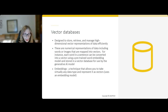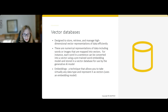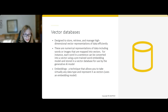Another component is a vector database. These have been around for a while, and they were designed to store, retrieve, and manage highly dimensional vector representations of data efficiently. Some generative AI applications are going to require this. These vectors are numerical representations of data — each word in a sentence can be converted into a vector using a pre-trained word embedding model. You take the unstructured text data, run it through a word embedding model, and that creates an embedding — a representation of any kind of data as a vector, which is a string of numbers. That data is stored in the vector database and can be used as input into a generative AI model.